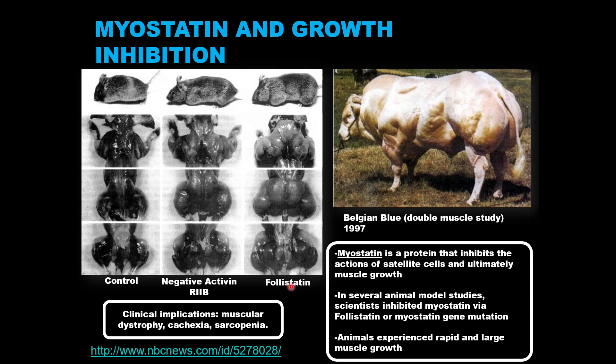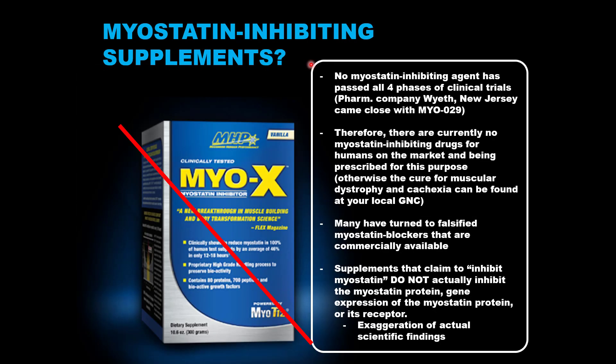The importance of these experiments in the human model lies in clear clinical implications for treatment of diseases characterized by muscle wasting or degeneration, like muscular dystrophy, cachexia (muscle wasting associated with cancer), sarcopenia (muscle wasting associated with aging), and other myopathies. Despite compelling evidence on myostatin inhibition via chemicals like follistatin, there is currently no FDA-approved drug treatment that is a myostatin inhibitor. There were concerns with safety and potential abuse, so these drugs did not pass all stages of clinical trials.